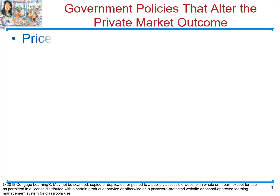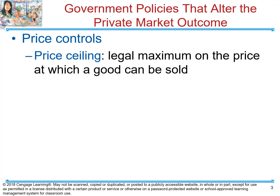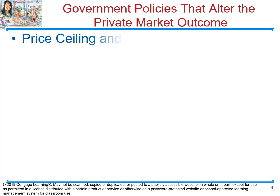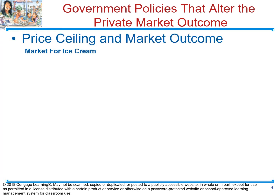The very first policy we're going to cover is price ceiling. A price ceiling is a legal maximum that a product can be sold for. I want you to read this definition and understand it — this is a legal maximum that the product can be sold for. A product can be sold for less than the legal maximum, but it cannot be sold for more than the legal maximum.